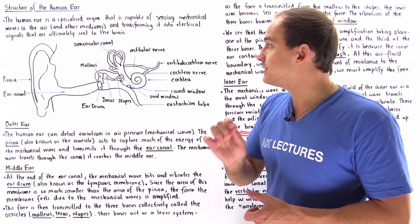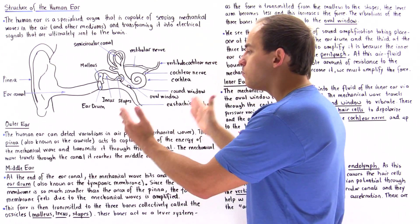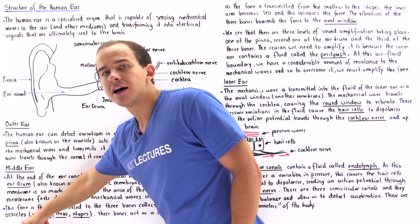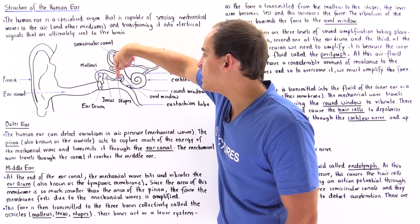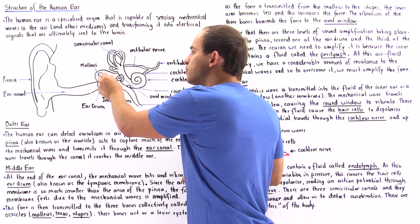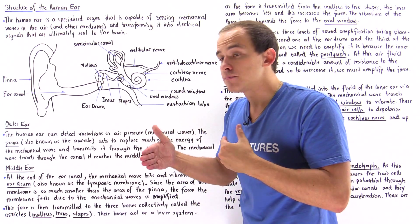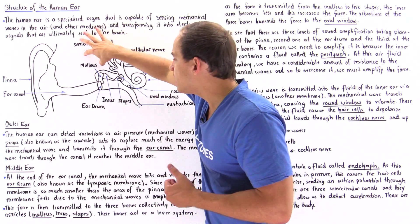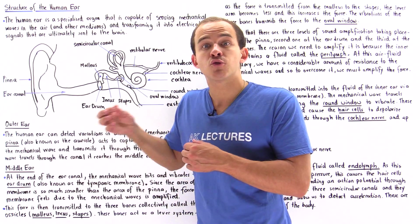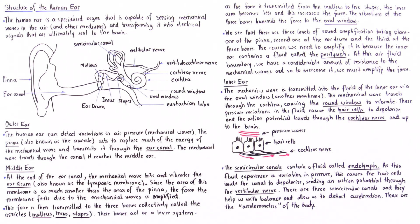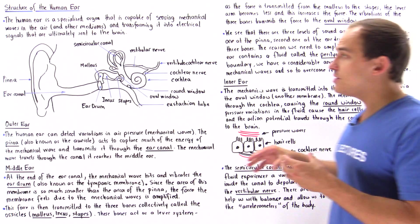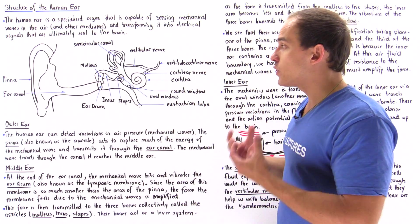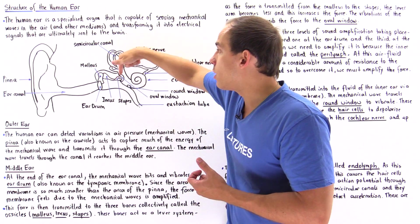The eardrum is connected directly to a bone known as the malleus. Inside the middle portion of the ear, we have the eardrum and three bones collectively known as the ossicles: the malleus, the incus, and the stapes. Each one of these bones is smaller than the previous one, with a smaller lever arm, so these three bones act as a lever system. As force is transmitted from the malleus to the incus to the stapes, the force increases as a result of the decrease in lever arm and displacement, creating further amplification.